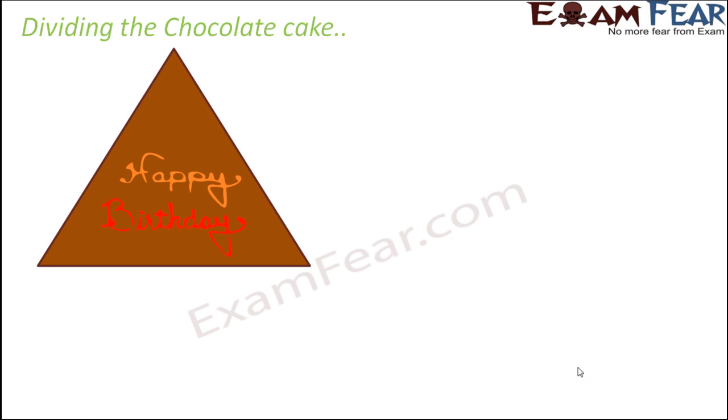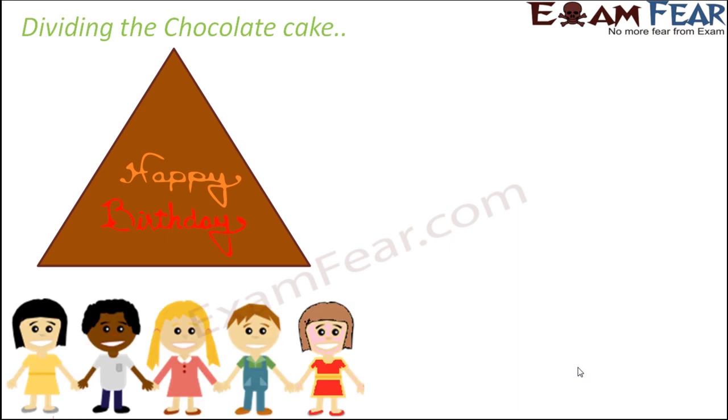Something like this, a triangular chocolate cake for your birthday this time. Now your mom gave you a task that you have to divide this cake into six equal pieces: five for your friends who have been invited for your birthday and one for yourself.